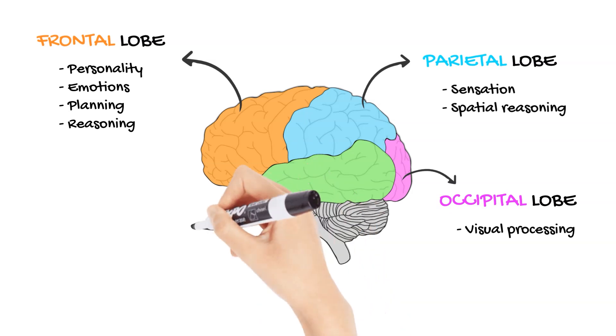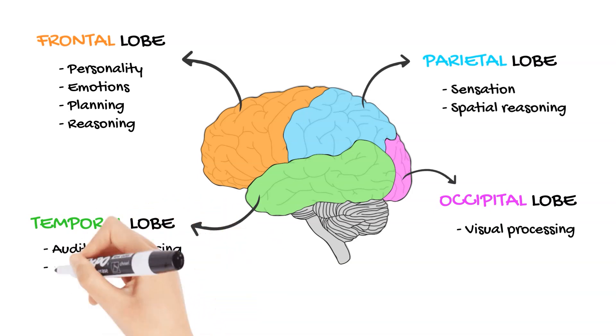The temporal lobe, lying beneath the temples, is the center of auditory processing and memory. It's where sounds are given meaning, from the beautiful complexities of music to the nuances of language. This lobe plays a crucial role in forming and retrieving memories, anchoring us in our personal timeline.